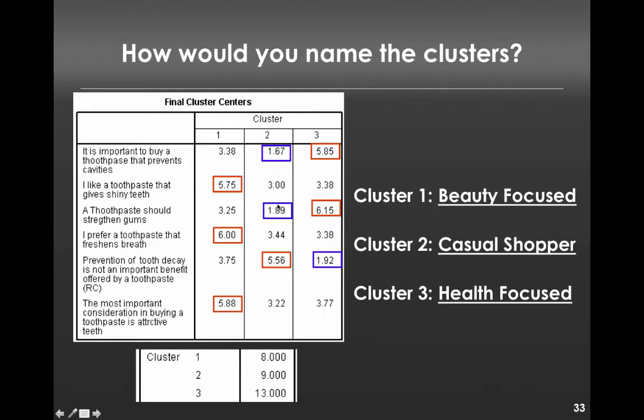The second category might be something like casual shoppers. They don't think it's important to buy toothpaste to prevent cavities. They don't think toothpaste should strengthen gums. And they do think that prevention of tooth decay is not an important benefit. So they're kind of like they just buy toothpaste because they have to buy toothpaste.